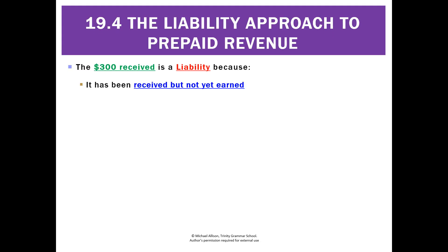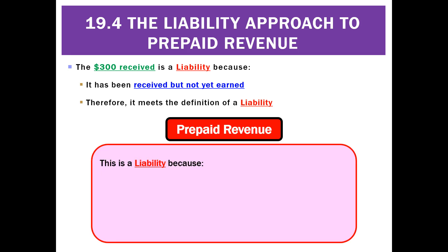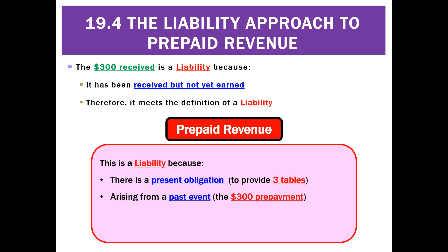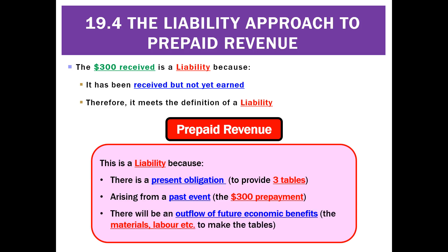And why is it a liability? Well, it's because we've got the $300 but we haven't yet earned it. If we go through the three parts of a liability, it meets our definition. There's going to be a present obligation — in this case, to provide three tables. There's a past event, which was the $300 that the customer prepaid us. And then in the future there'll be an outflow of economic benefits, which will be all the materials and labor — the wood and so on — in order to make the tables.